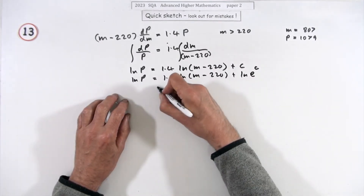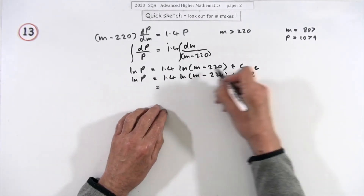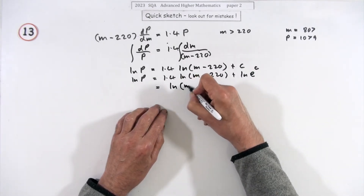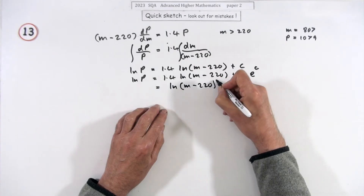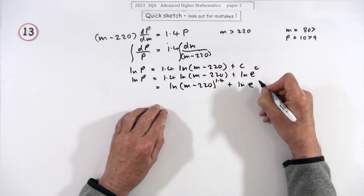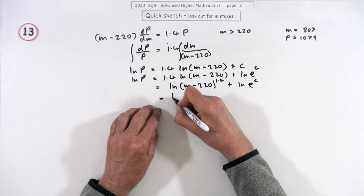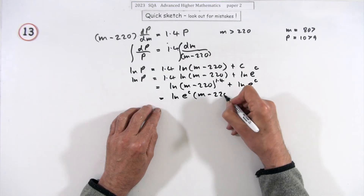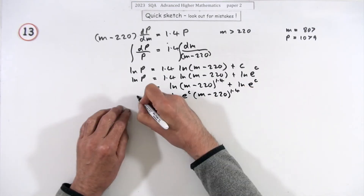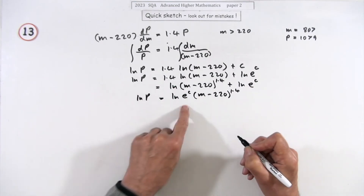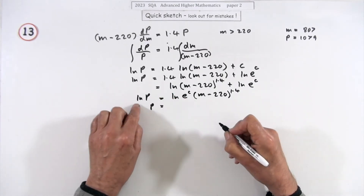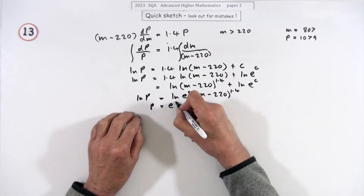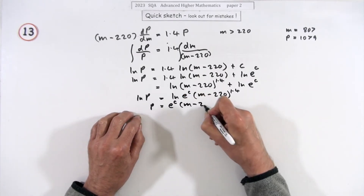Now you can tidy up: that pops inside the log, and since you've got exposed logs they add together to make a single log of e^c times (m minus 220)^1.4. Since the logarithms are equal, the arguments must be equal, so p equals e^c times (m minus 220)^1.4.